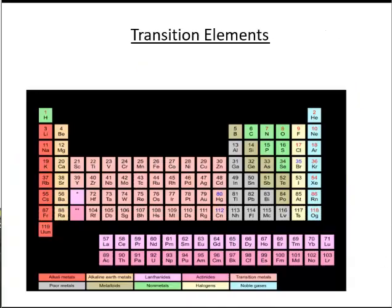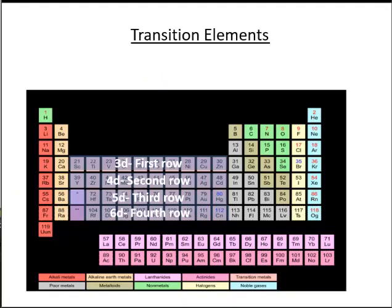Four series of elements are formed by filling the 3D, 4D, 5D, and 6D shells of electrons, often called as the first, second, third, and fourth row of transition series, respectively.